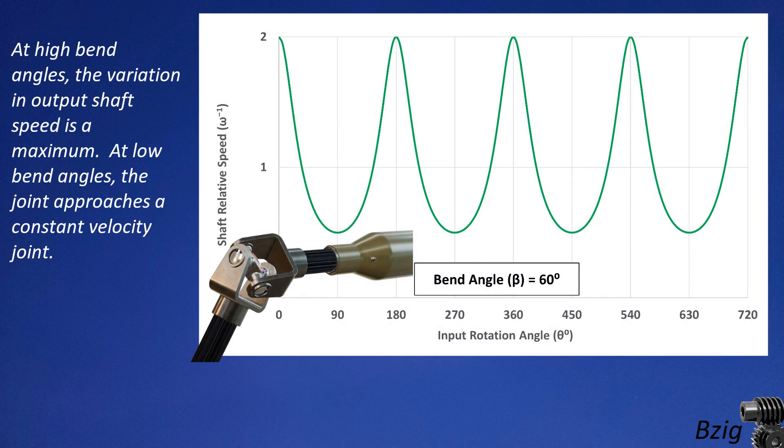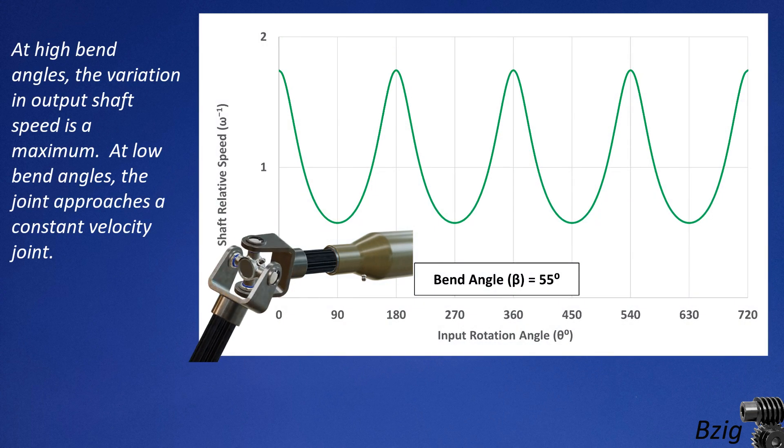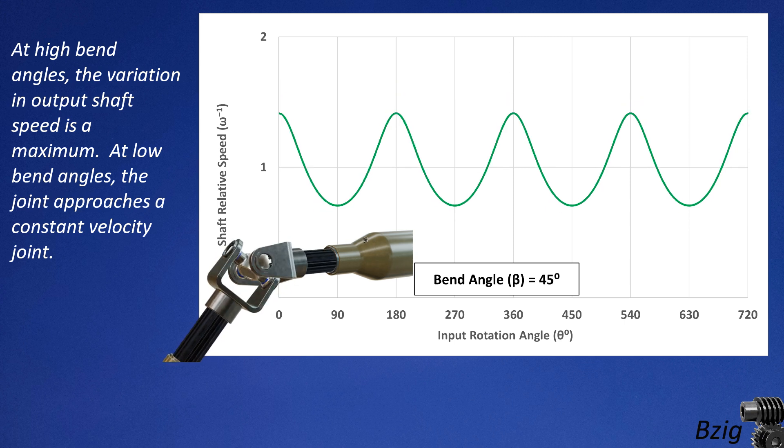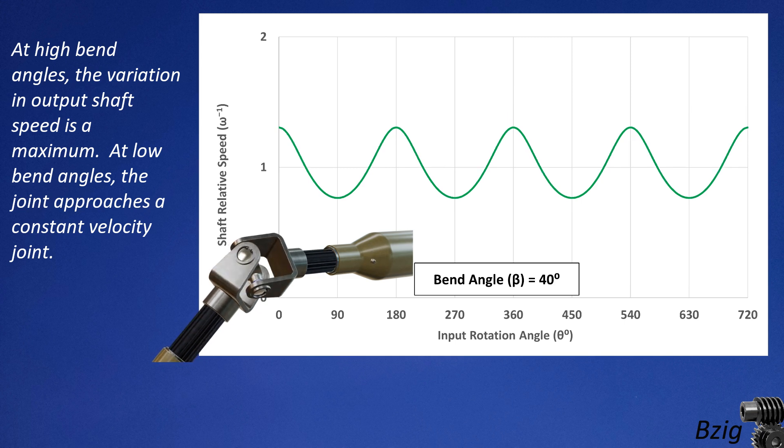I'll now plot this equation as a function of the rotation angle for several bend angles starting from 60 degrees and ending at zero. I'm keeping the scale of the graph constant in order to give an idea of the relative change in output shaft velocity at different bend angles.